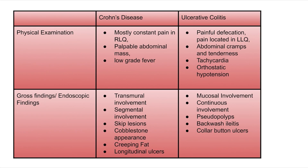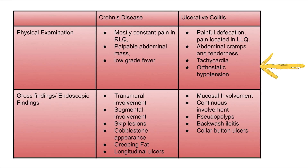On physical examination, Crohn's disease typically presents with constant pain in the right lower quadrant, a palpable abdominal mass, and low-grade fever. In ulcerative colitis, there is painful defecation with pain mostly in the left lower quadrant, abdominal cramps, tenderness, tachycardia, and orthostatic hypotension.